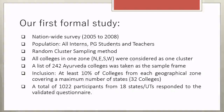We conducted a nationwide survey where all interns, PG students, and teachers were defined as our population, and we used a random cluster sampling method. We included around 32 colleges from North, East, South, and West zones, where all colleges in one zone were considered as one cluster. A list of 242 Ayurvedic colleges was taken as the sample frame, with inclusion criteria of at least 10% of colleges from each geographical zone covering a maximum number of states.